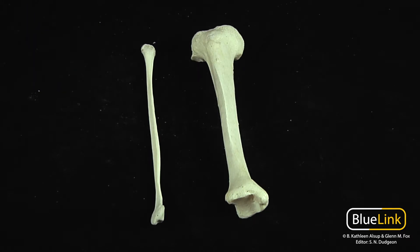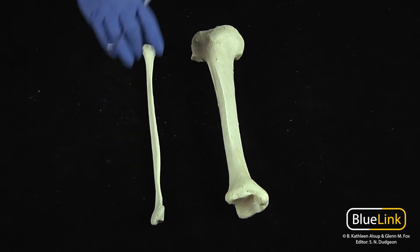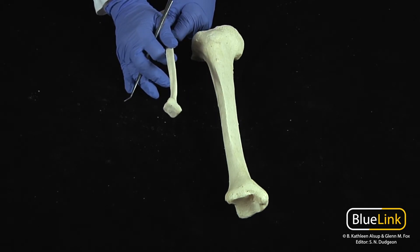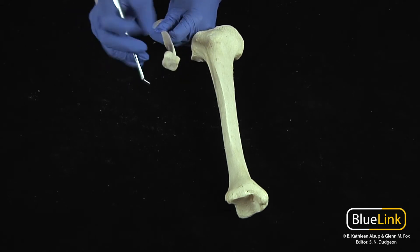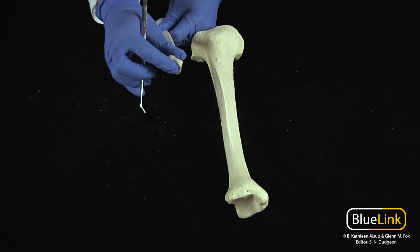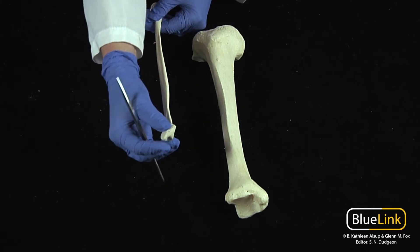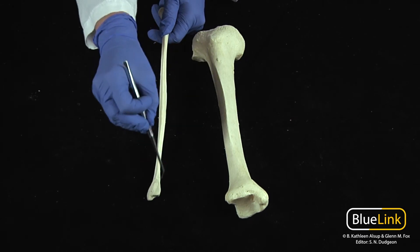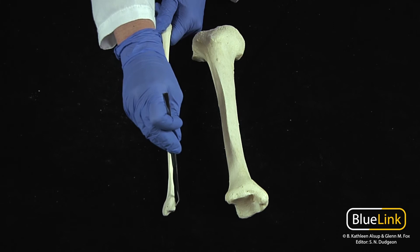One of the things that confuses most students in terms of the fibula is the difference between the head and the lateral malleolus, because they do look fairly similar. The head is on the proximal end of the fibula — it is going to be more massive, a little more square. The articular surface on the head is going to be superiorly or proximally facing. Whereas the lateral malleolus, the distal end, is going to taper off, and the articular surface is going to be facing medially, towards the tibia. This is where you're actually going to have articulation with the talus.